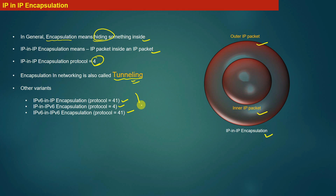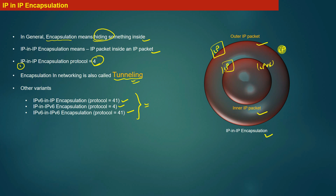IP in IP encapsulation means an IP packet inside another IP packet. IPv6 in IP encapsulation means the outer packet is an IP packet and the inner packet is an IPv6 packet. IP in IPv6 encapsulation means the outer packet is IPv6 and the inner packet is IP. IPv6 in IPv6 encapsulation means both the outer and inner packets are IPv6 packets.